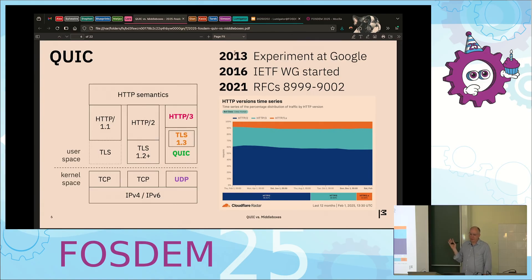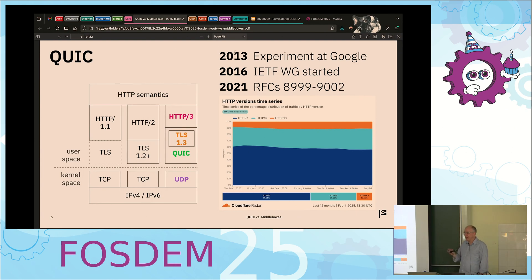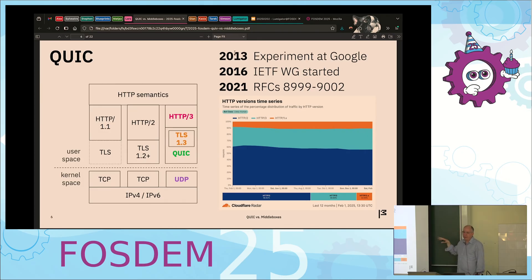The timeline very roughly: Google's experiment started in 2013. Three years later they came to the IETF; we had a very interesting meeting and decided to take it forward. The IETF working group started, and like five years later — which for the IETF is super fast — we had a bunch of RFCs and QUIC became a standard. Around 30% of the web is HTTP/3 at the moment, which is not bad considering it became an RFC about four years ago.